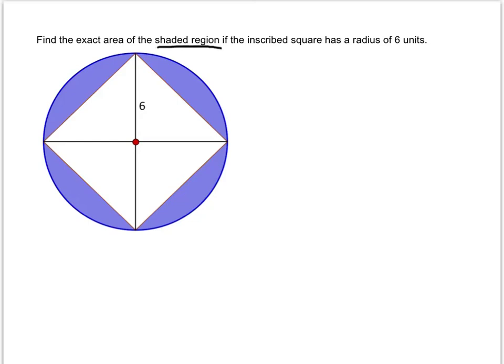In order to find the shaded region, we'll need to find the area of the circle and subtract the area of the square. Area of a circle is found with pi times radius squared. Area of a square is just side length raised to the second power.